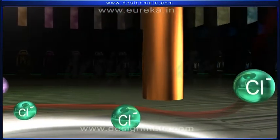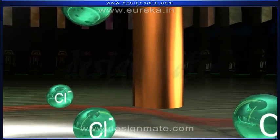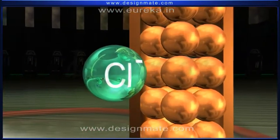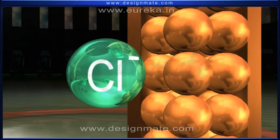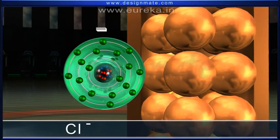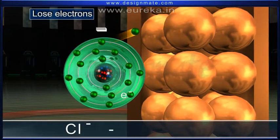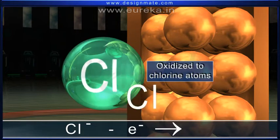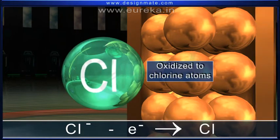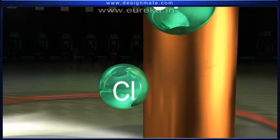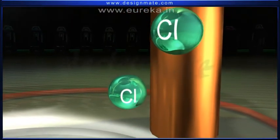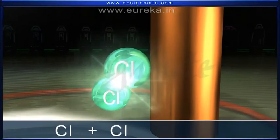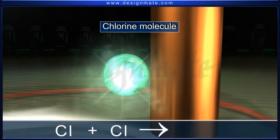Chloride ions, being negatively charged, are attracted towards the anode. Here, these ions lose the electrons and are oxidized to neutral chlorine atoms. Two such chlorine atoms combine to form a molecule of chlorine.